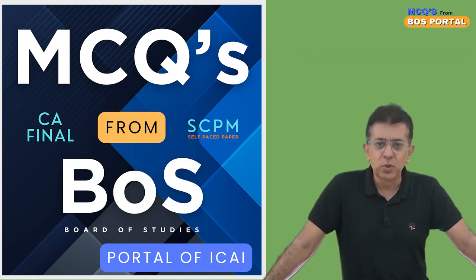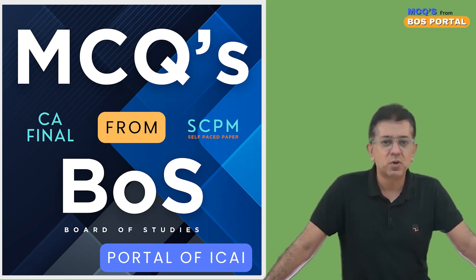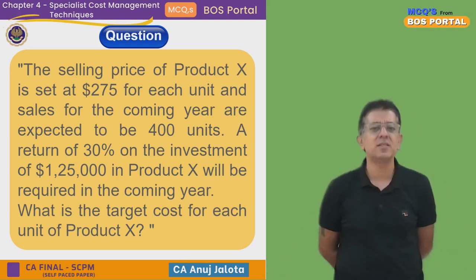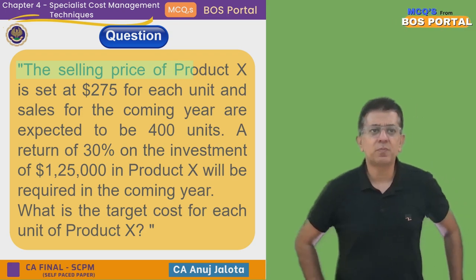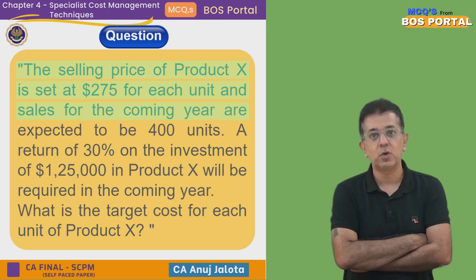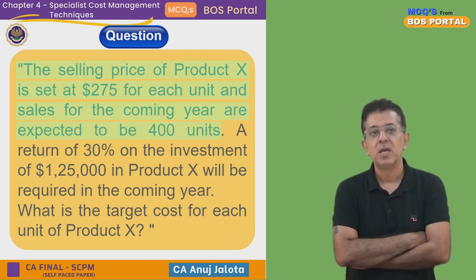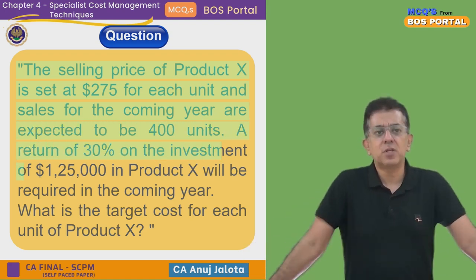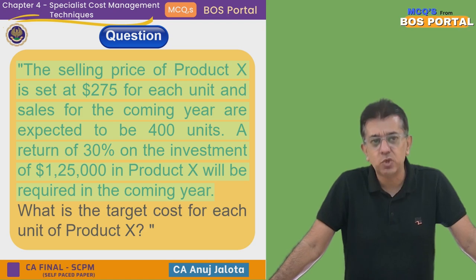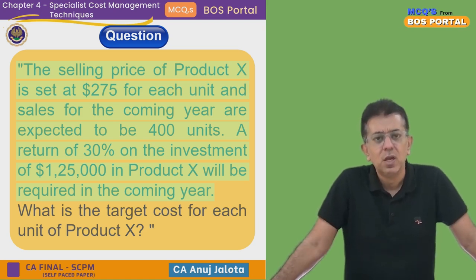We are on to Chapter 4, which covers various concepts like target costing, lifecycle costing, etc. This question is on target costing. The selling price of Product X is set at $275 per unit. Sales for the coming year are expected to be 400 units. A return of 30 percent on investment of $125,000 in Product X will be required. What is the target cost for each unit of Product X?